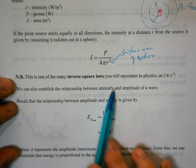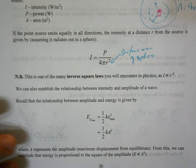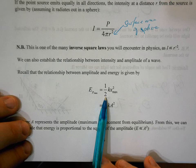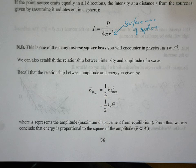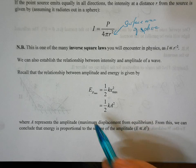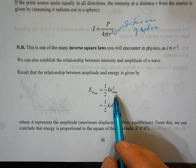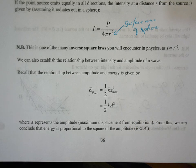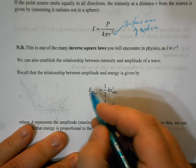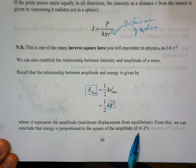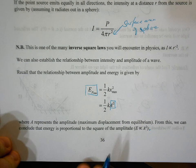We can now establish a relationship between the intensity of a wave and its amplitude. Recalling from the last unit when we looked at potential energy and amplitude, we know that the maximum potential energy Ep_max equals ½kx²_max, or equivalently, ½k times amplitude squared. So energy is proportional to amplitude squared — this is the first key relationship: E ∝ A².